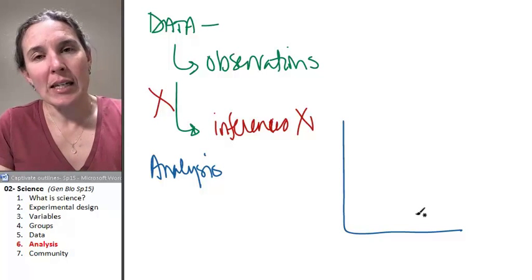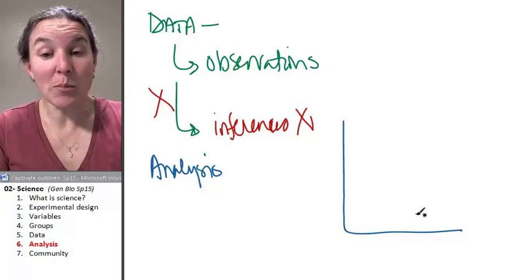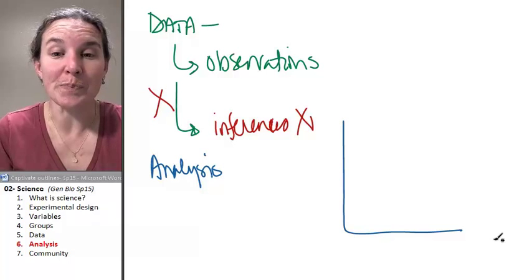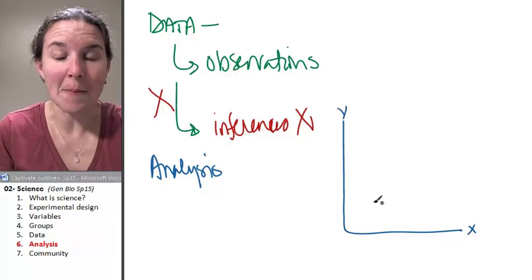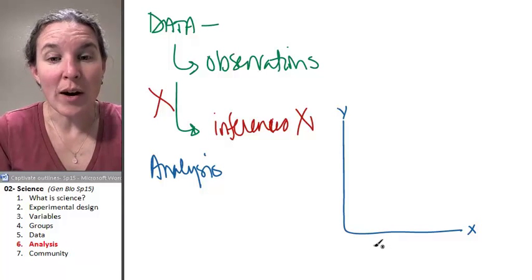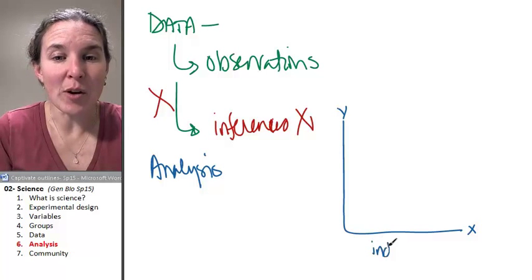I'm bringing in the graph because I think it's important for us to make sure that we know that on the x-axis, as opposed to the y-axis, the x-axis is where the independent variable goes.